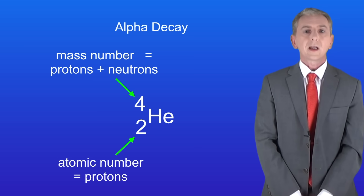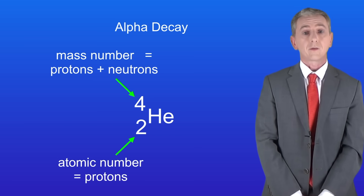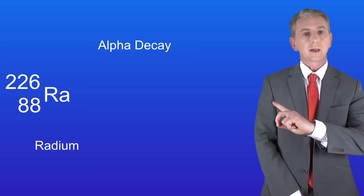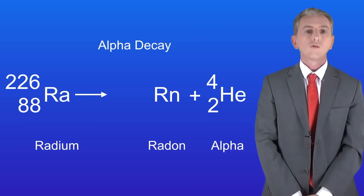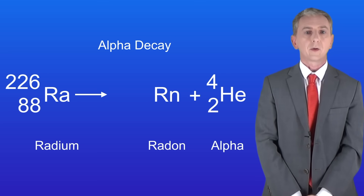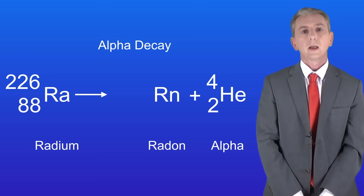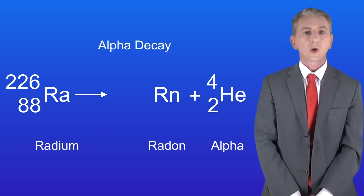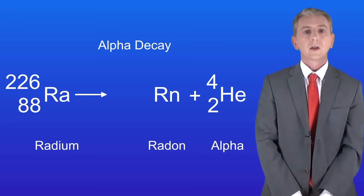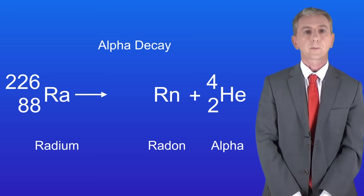Let's look at a nuclear equation for alpha decay. This shows the element radium. Radium decays by releasing an alpha particle and this produces the element radon. You could be asked to work out the atomic number and the mass number for the element produced by alpha decay, so let's work them out for the radon that's produced here.